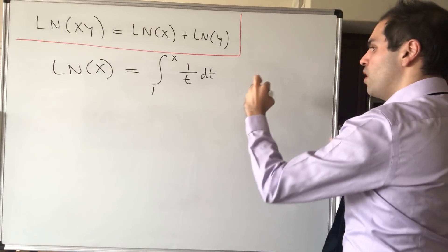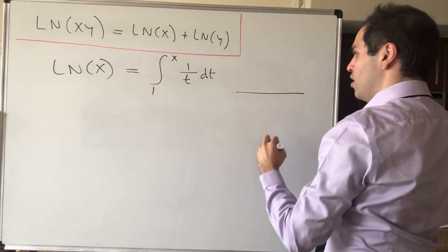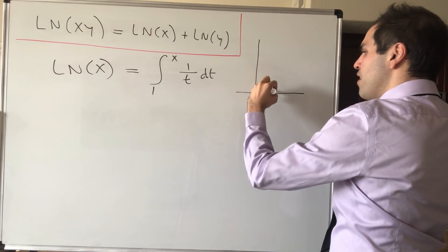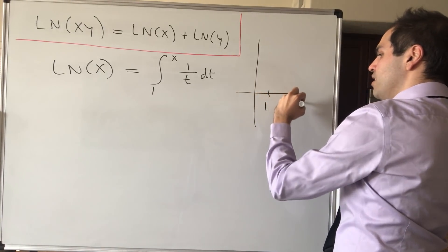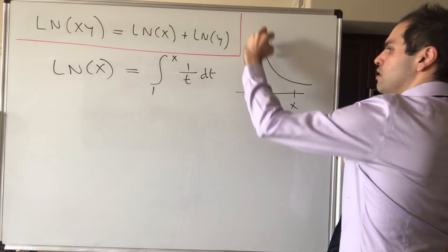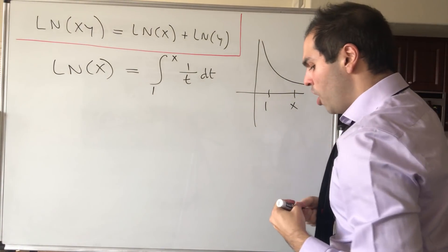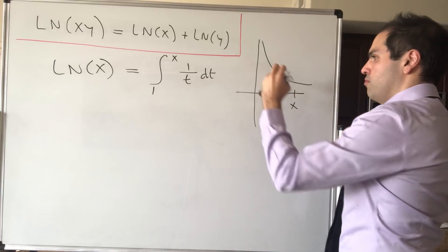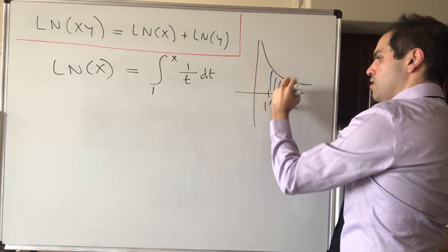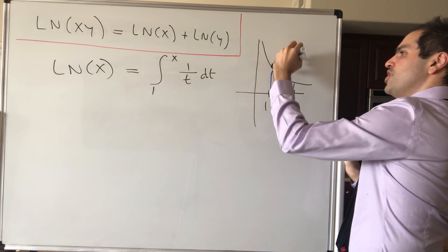In other words, what is the natural log? It's simply the area of the function 1 over t, kind of like this, from 1 to x. So this is by definition ln of x.